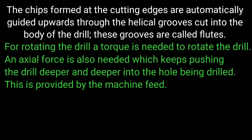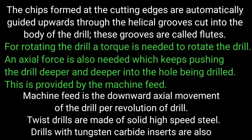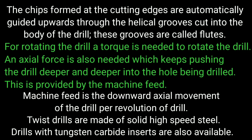This is necessary; otherwise the chips will interfere with the metal cutting. For rotating the drill and to overcome the resistance in cutting, a torque is needed. An axial force is also needed which keeps pushing the drill deeper and deeper into the hole being drilled. This is provided by the machine feed — the downward axial movement of the drill per revolution. To facilitate the cutting action, a small depression is made by a punch at the center of the hole to be drilled. Twist drills are made of solid high-speed steel, hardened and ground to shape; drills with tungsten carbide inserts are also available.